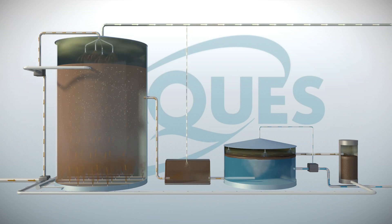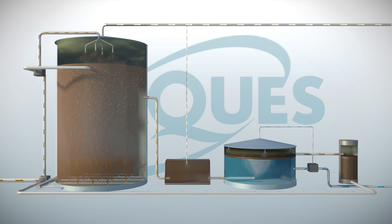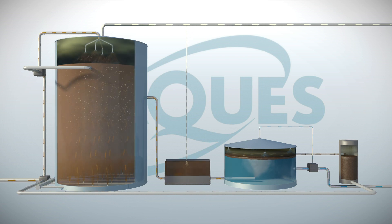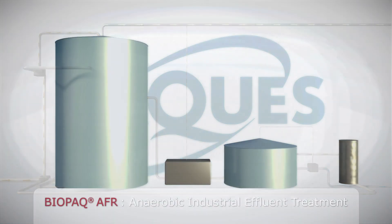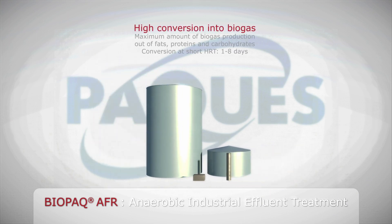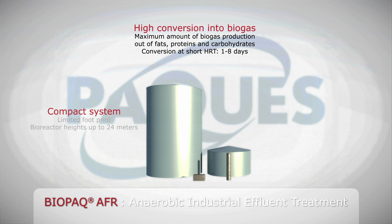The Biopac AFR process is applied in a variety of industries such as the dairy industry, food tank cleaning, fish processing and poultry industry. The AFR system maximizes the biogas production from fats, proteins and carbohydrates. Both soluble and insoluble compounds are efficiently converted into biogas at short hydraulic retention times, typically between one to eight days. Due to the efficient retention of biomass, the system is compact and has a limited footprint.